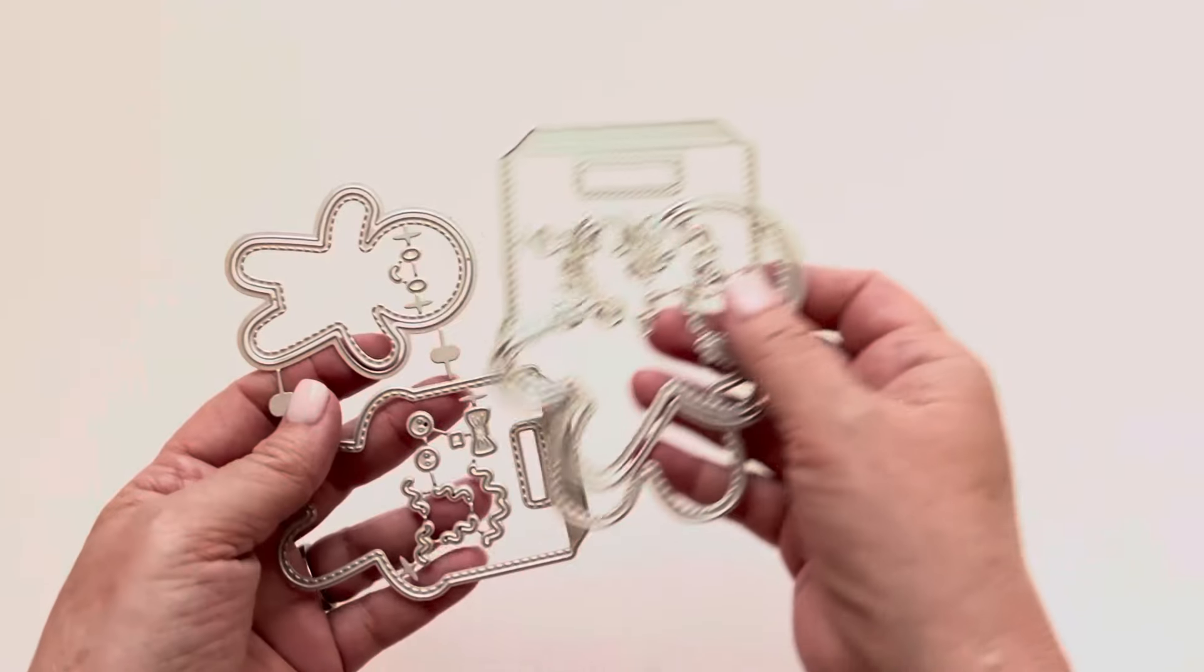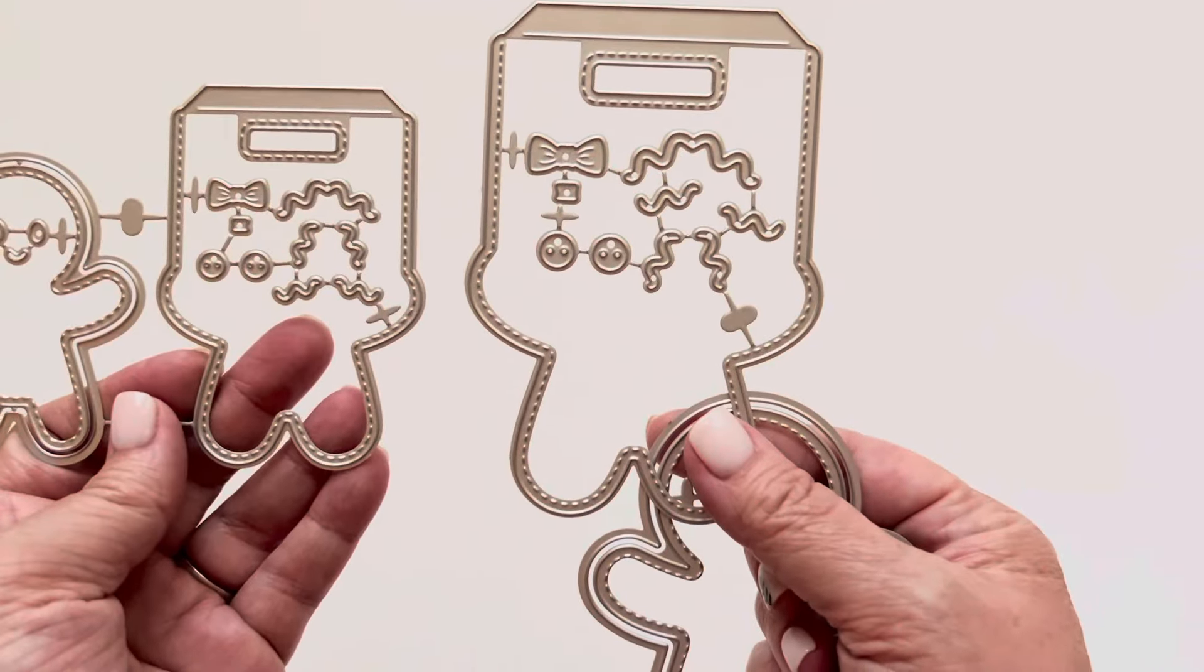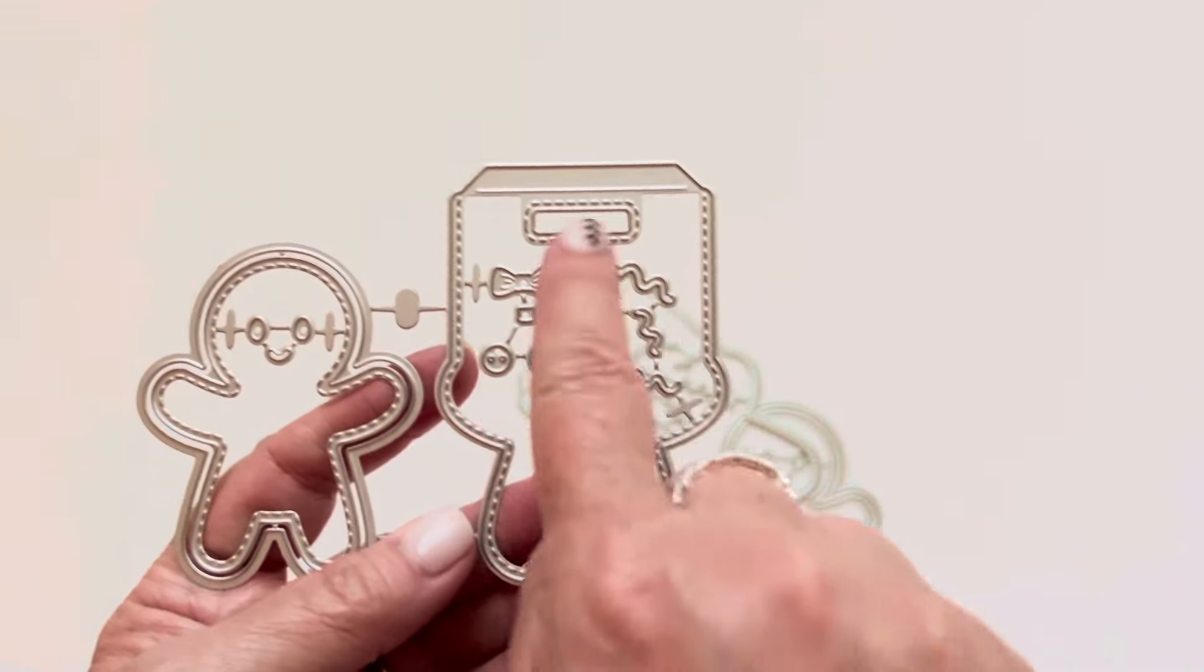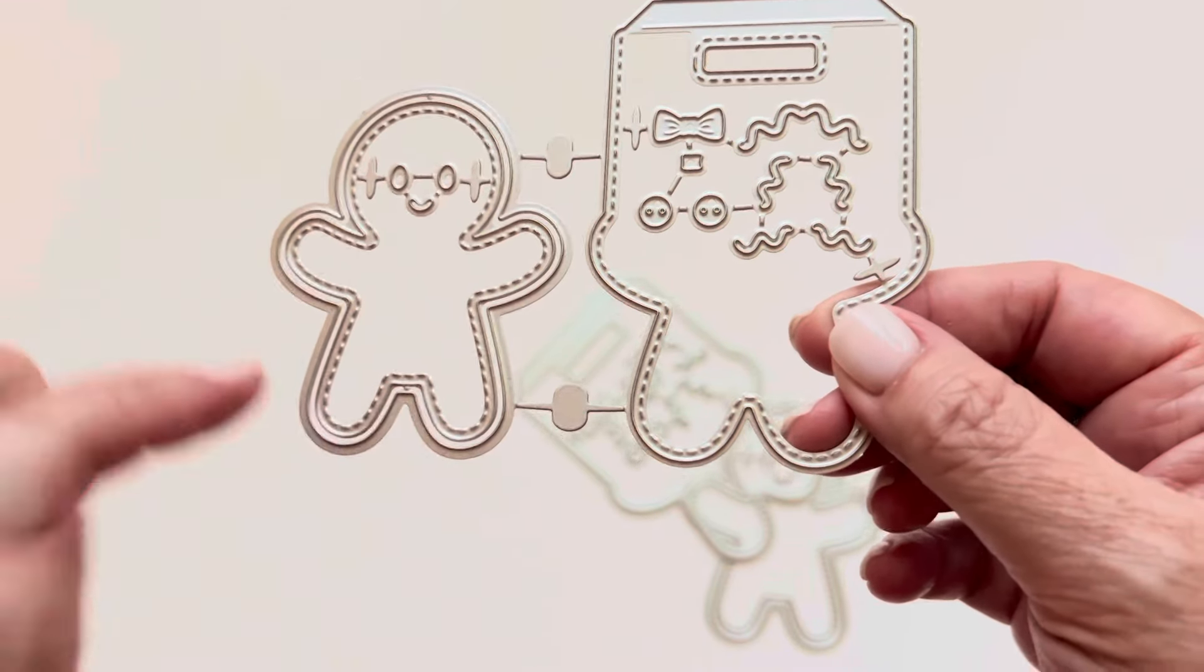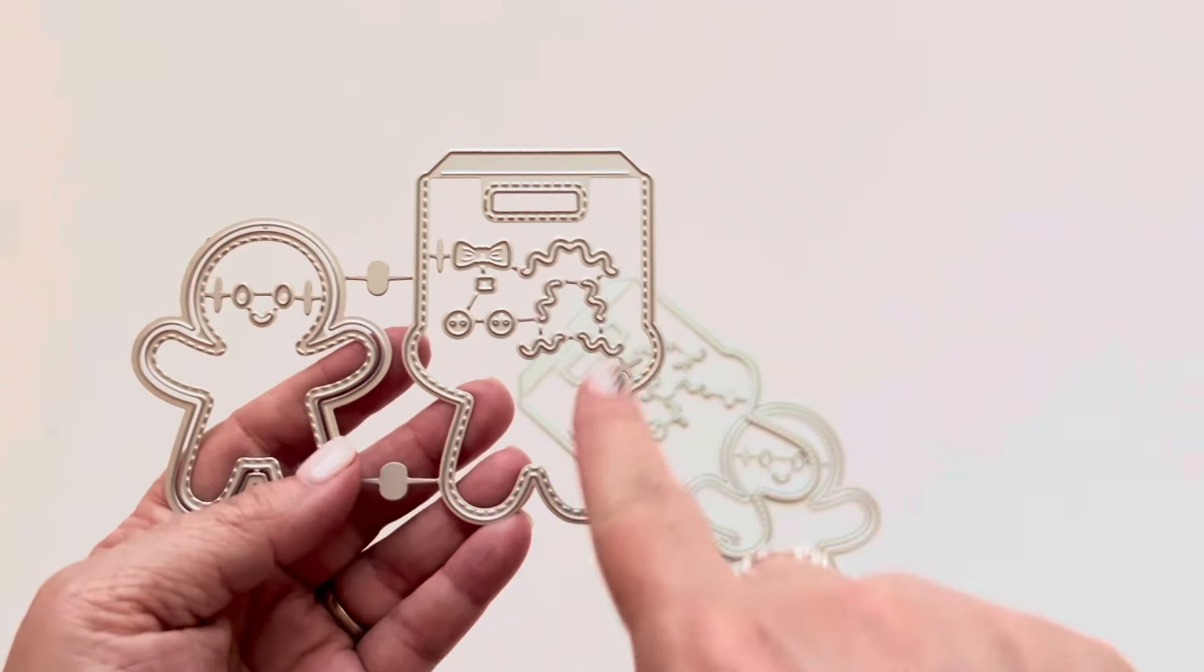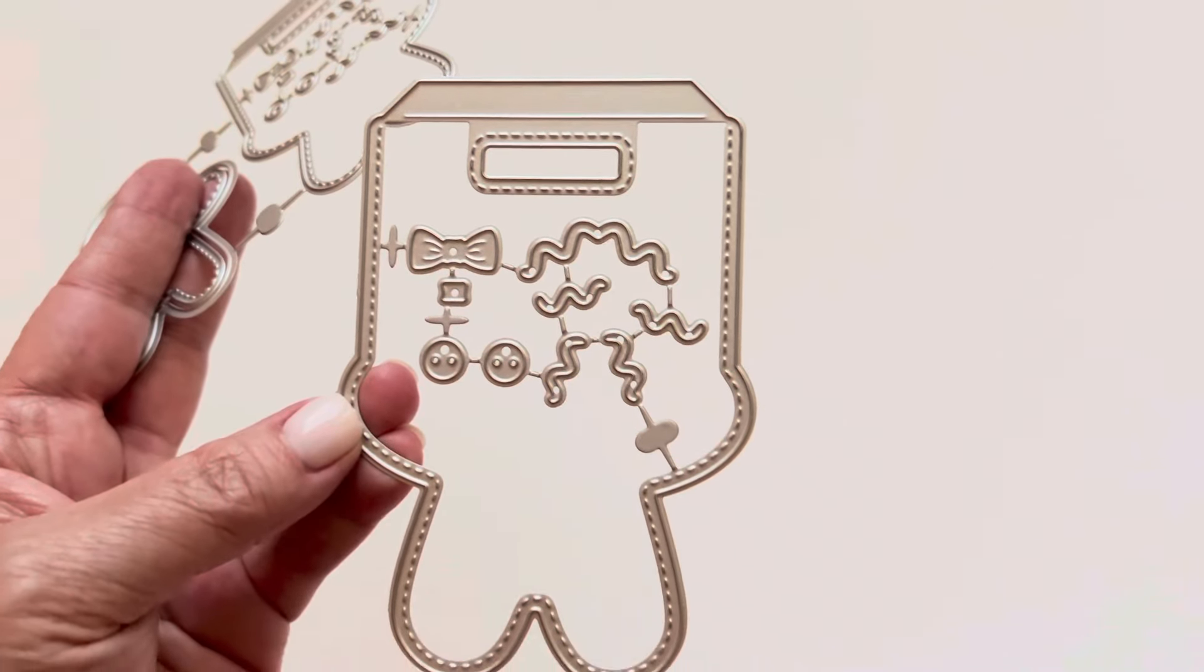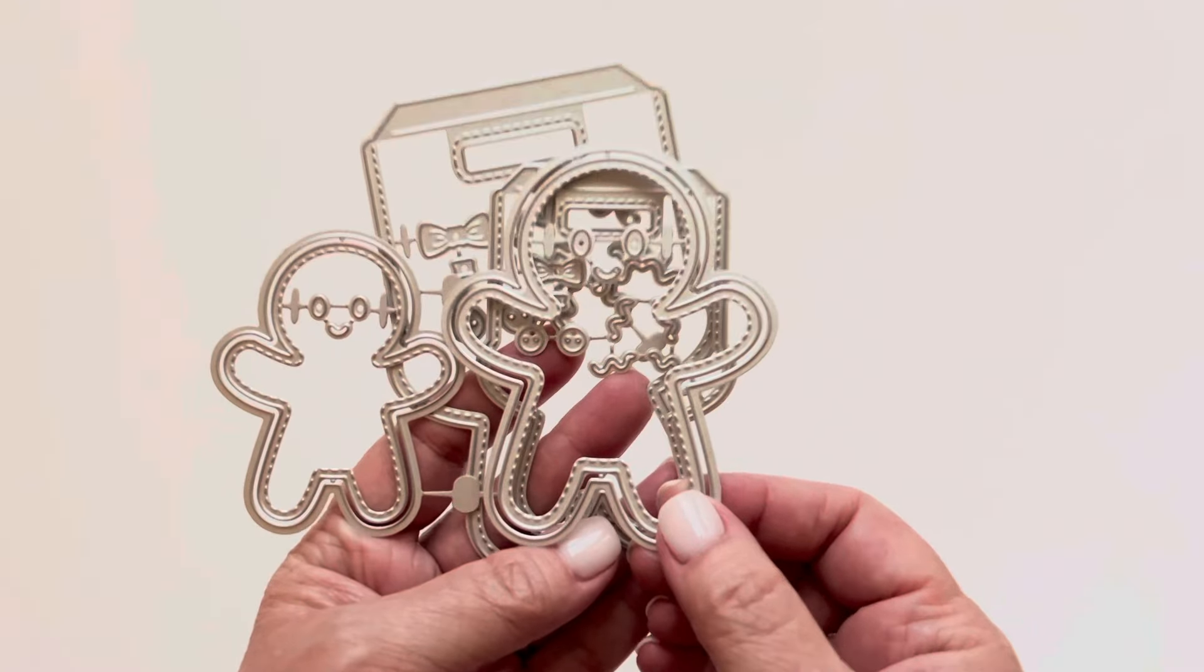Okay. Then we have the gingerbread man bag toppers. You actually get two in the set. So you get this small one here and then you get a large one, like perfect size to make some really fun bag toppers. You of course have all of the pieces here to add your frosting and all the good stuff. You have layering pieces. I kind of feel like this could perhaps be a shaker if you wanted it to be with, because you have those two layers, but this is going to layer on top of here and then you have all the fun stuff to kind of make him come alive. And then you have the exact same thing in the larger size. So super cute. And if you didn't want to create bag toppers, you have just these two really fun sizes of gingerbread men. So this is like a really fun one as well.